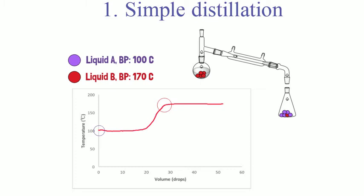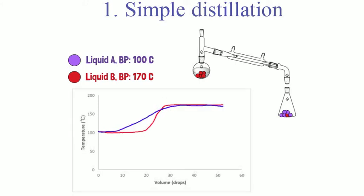Now, what if the liquids don't have a large difference in their boiling points? For example, ethanol and water have only a 22 degree difference in their boiling points. Now, the curve is going to look like this, meaning the distillate is a mixture of water and ethanol, which is not a great separation.